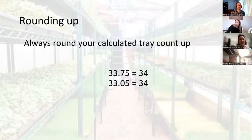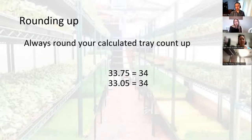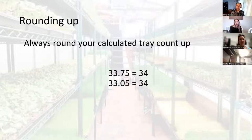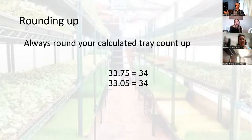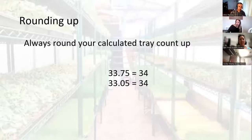One thing we used to do as our production grew was always round up to the nearest multiple of three. If our calculation showed we needed 17 trays, we'd round up to 18; if it showed 16 trays, we'd also round up to 18. We always stacked our trays in multiples of three — never fours or fives — so we were always working in multiples of three. It might seem like we've done all these specific calculations just to round up by multiples of three, but that's the system that worked for us.